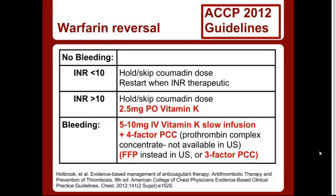If less than 10, essentially all you have to do is skip or hold a dose, start rechecking your INRs, and restart when therapeutic. If your patient has an INR greater than 10, give them 2.5 milligrams of PO vitamin K, then same as prior — hold or skip a dose until they're therapeutic again.